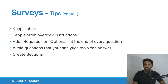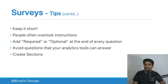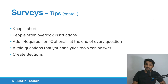Ask 'required' or 'optional' at the end of every question. Some tools show a small red asterisk for required questions, but it can easily be overlooked because it's so small. It's better to add the word 'required' explicitly at the end of the question so users clearly know it needs to be answered.